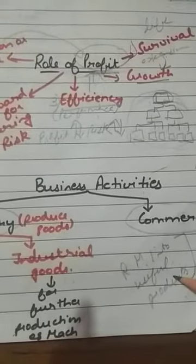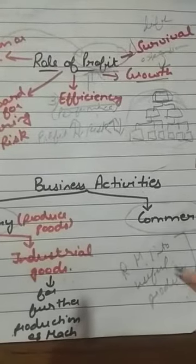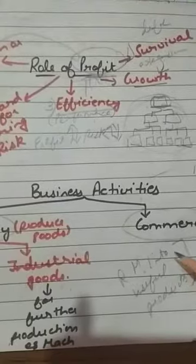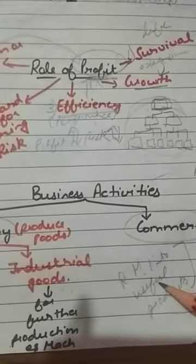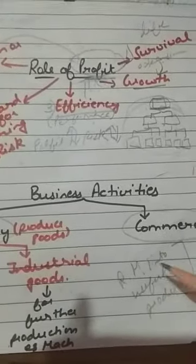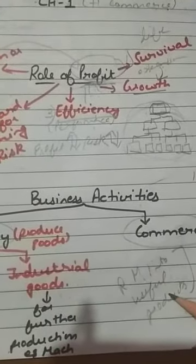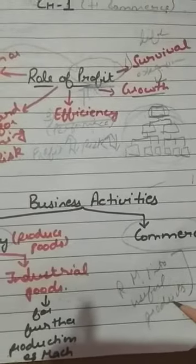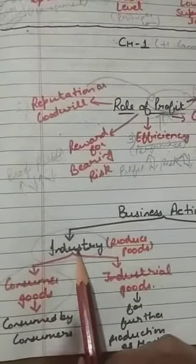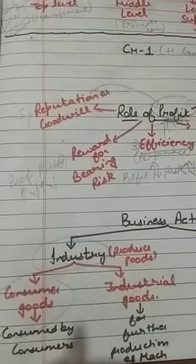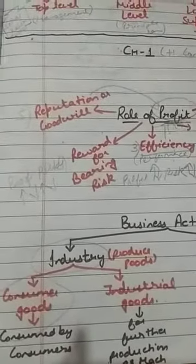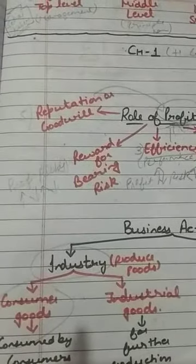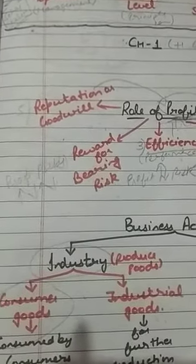In order to produce clothes, we have to deal with cotton. This is the production process, which converts raw material into useful products. Industry is a concern which converts raw material into finished products.